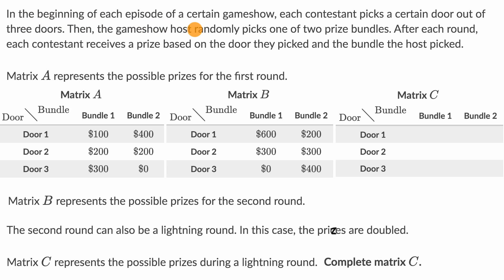In the beginning of each episode of a certain game show, each contestant picks a certain door out of three doors. Then the game show host randomly picks one of the two prize bundles. After each round, each contestant receives a prize based on the door they picked and the bundle the host picked.